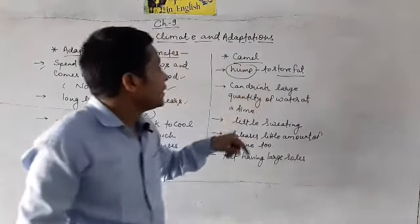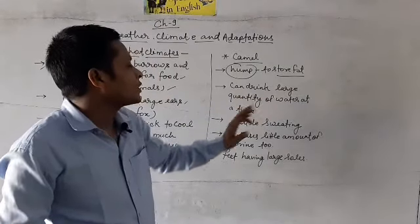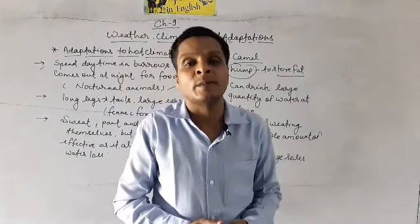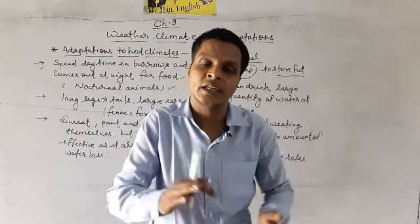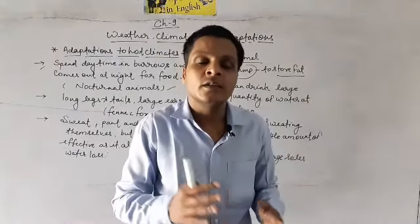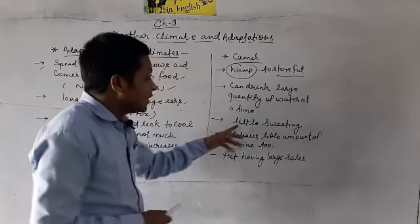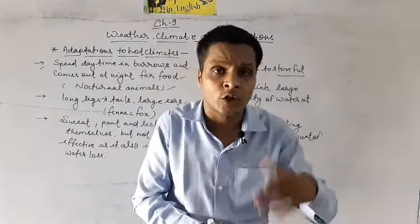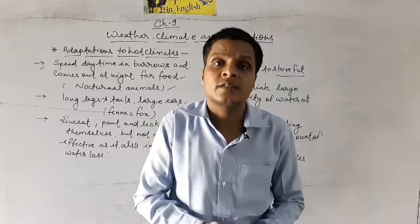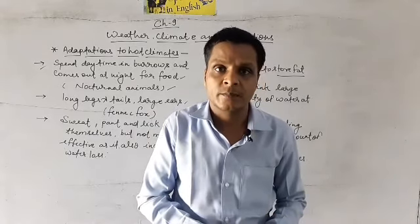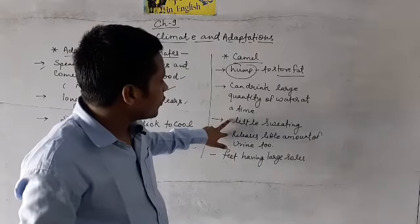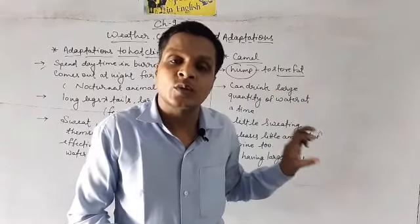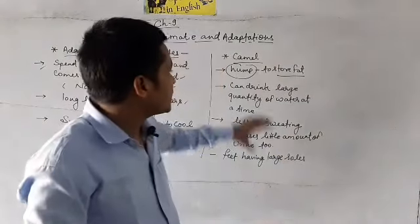Second hai ki camel can drink large quantity of water at a time - yaani ki ye ek baar mein bahut hi jyada pani peene ki capability rakhte hain, large amount of water ye drink kar sakte hain. Little sweating and release little amount of urine too - inke andar sweating bhi kam hoti hai aur urine bhi jo release karte hain, waste ke form mein, woh bhi bahut hi kam release karte hain. Yeh dono points bata rahe hain ki in mein water loss kam ho raha hai, isiliye camel easily desert mein survive kar leta hai.